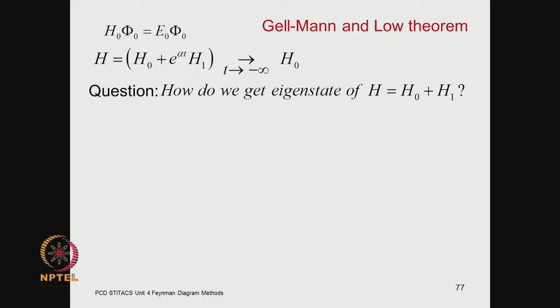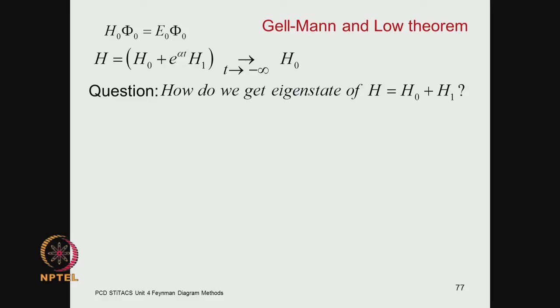Our question is: if we introduce an artificial mathematical parameter alpha with which we control the correlation, or part of the Hamiltonian which we are not able to handle using normal methods of quantum theory, for which we need special techniques — alpha is this control parameter. Our interest is in getting the eigenstates of the full Hamiltonian. The eigenstate of the full Hamiltonian will come down to the eigenstates of the unperturbed Hamiltonian as t goes to minus infinity, because e to the minus alpha t will kill the H1 term.